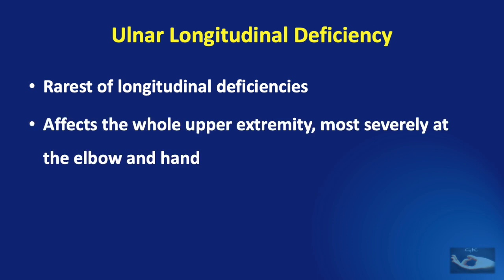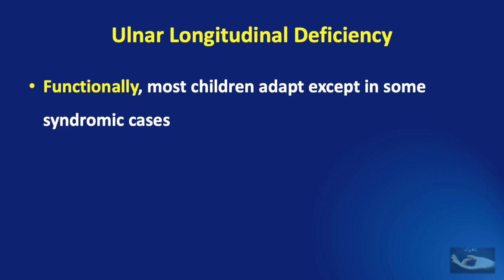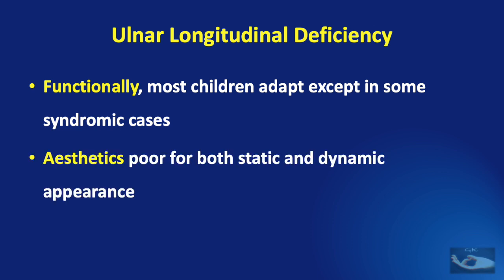It affects the whole upper extremity, most severely at the elbow and hand. In this condition, functionally most children adapt, except in some syndromic cases, but aesthetically they are very poor for both static and dynamic appearance.